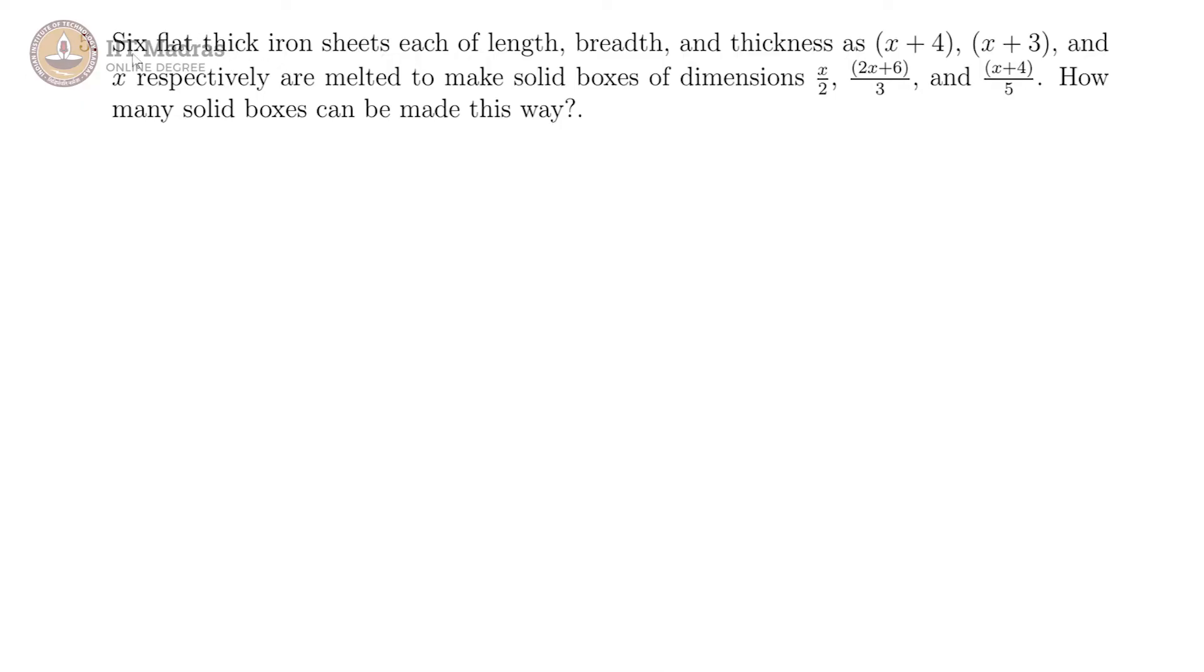There are six flat thick iron sheets, each of length, breadth, and thickness (x+4), (x+3), and x respectively. They are melted to make solid boxes of dimensions x/2, (2x+6)/3, and (x+4)/5. How many solid boxes can be made this way?